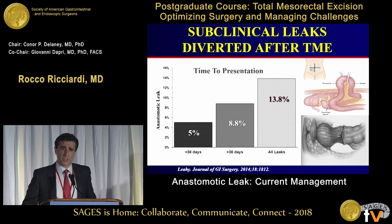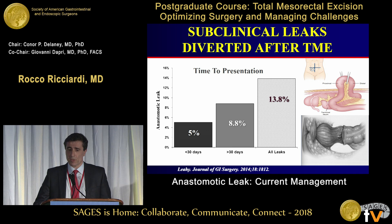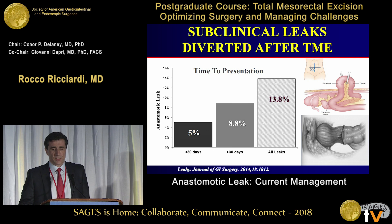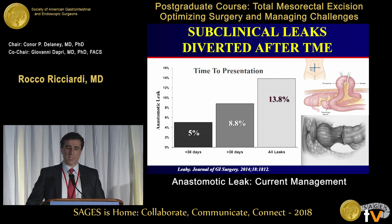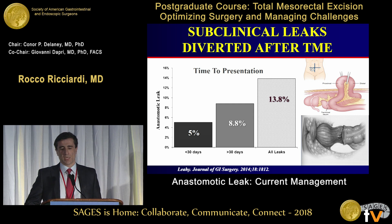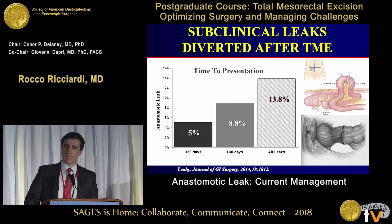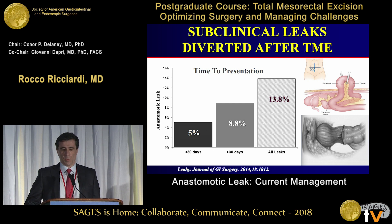This is important because our patients after TME are often diverted. We published a study a couple of years ago looking at time to presentation of patients after construction of their anastomosis. We had a reasonable rate of anastomotic leak after diverted anastomoses within 30 days of about 5%. These are challenging anastomoses, very low to the anus. However, there were almost twice as many leaks that occurred after 30 days.